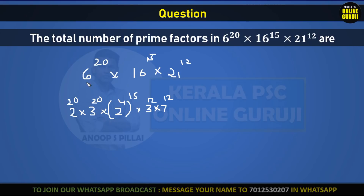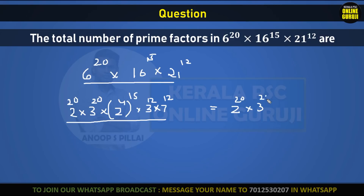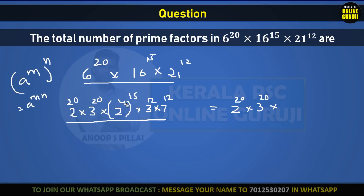We can convert this value to the power of prime numbers. We can convert this value: 2 raised to 20, 3 raised to 20, then 2 raised to 4. We multiply 2 raised to 4 and 15, giving 2 raised to 60, 2 raised to 12, 3 raised to 12, and 7 raised to 12.